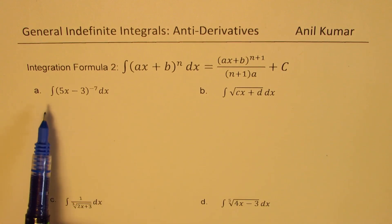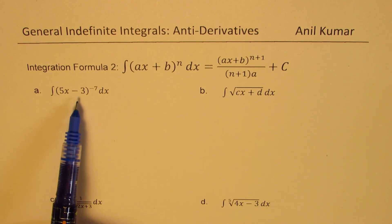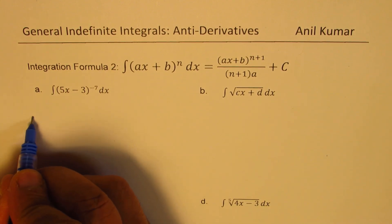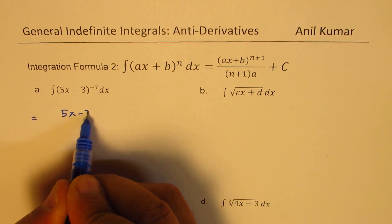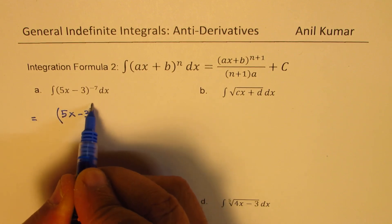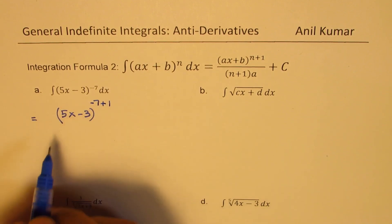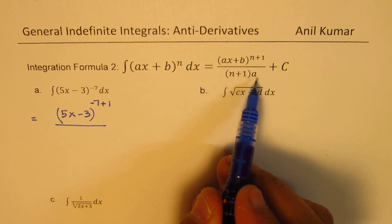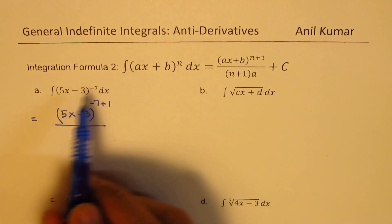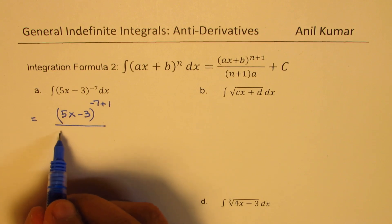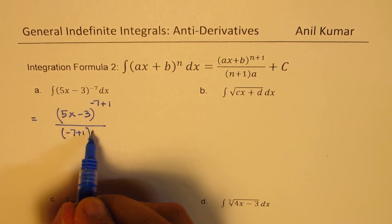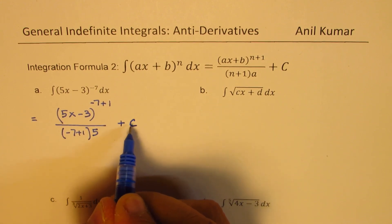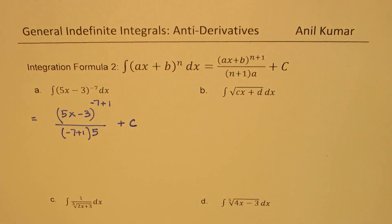The very first one here is integral of 5x minus 3 to the power of minus 7. Directly the formula can be applied. So what we get here is 5x minus 3 and the power minus 7, we are going to add 1 and divide. So we say n plus 1 times a. The constant a here is 5.